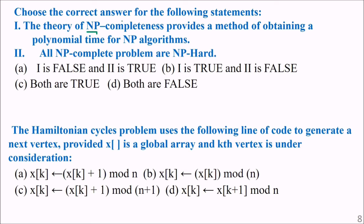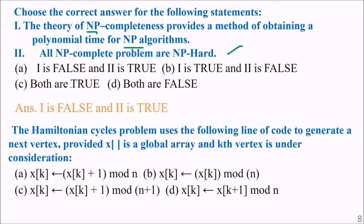Choose the correct answer for the following statement: the theory of NP completeness provides a method of obtaining a polynomial time algorithm for NP. Nothing is false — all NP complete problems are NP hard, but the theory of NP completeness does not provide a method of obtaining a polynomial time algorithm for NP, so nothing is false in the stated options.